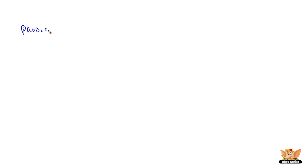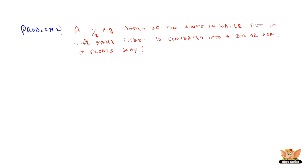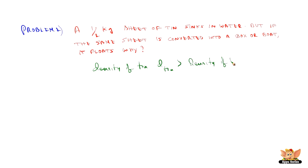Problem 2: A half kg sheet of tin sinks in water, but if the same sheet is converted into a box or boat, it floats. Why? First, why does the tin sheet sink in water? Because the density of tin is greater than the density of water. Since the density of tin is greater than the density of water, the sheet sinks.